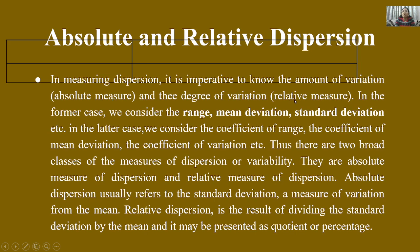They are the absolute measure of dispersion and the relative measure of dispersion. Absolute dispersion usually refers to the standard deviation — it tells us how many of the variables vary from the mean. Relative dispersion is the result of dividing the standard deviation by the mean, expressed as a quotient or percentage.